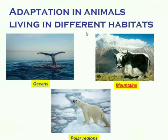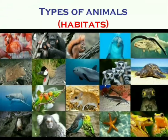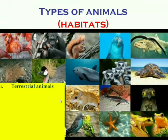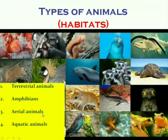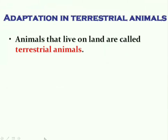There are several types of animals found on Earth, found in every place from deep oceans to high mountains and frozen polar regions. These animals have different features which help them live comfortably in their environment. Based on their habitats, animals are grouped as terrestrial animals, amphibians, aerial animals, aquatic animals, and arboreal animals.